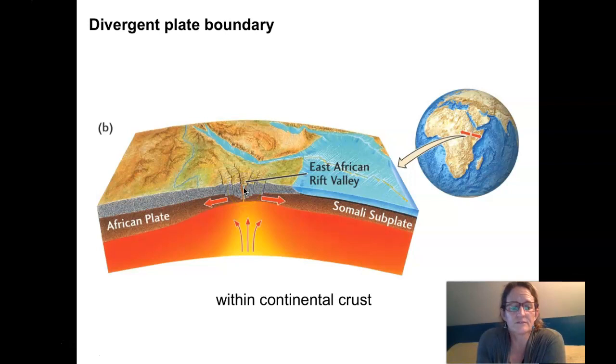This will one day become an ocean basin. Right here we have the Gulf of Aden and the Red Sea, and that's what we call a triple junction. So this area is also spreading, and so is this area, the southern part of the Arabian Peninsula.